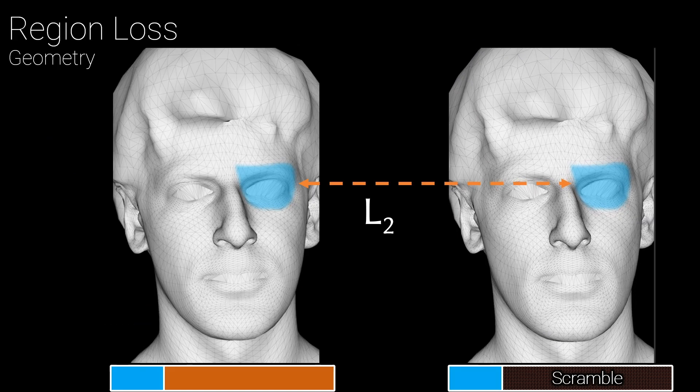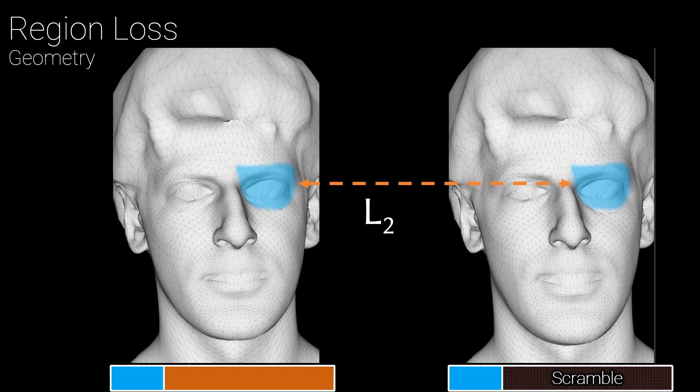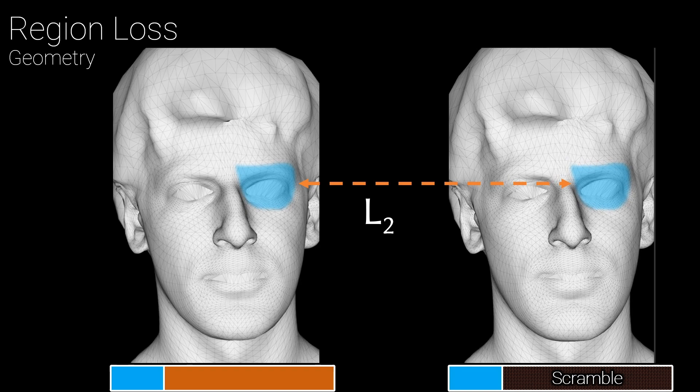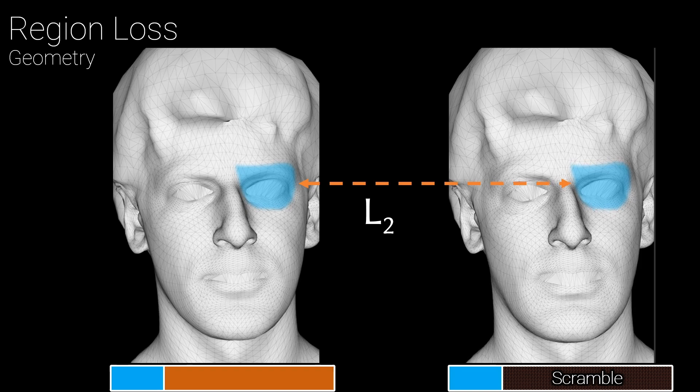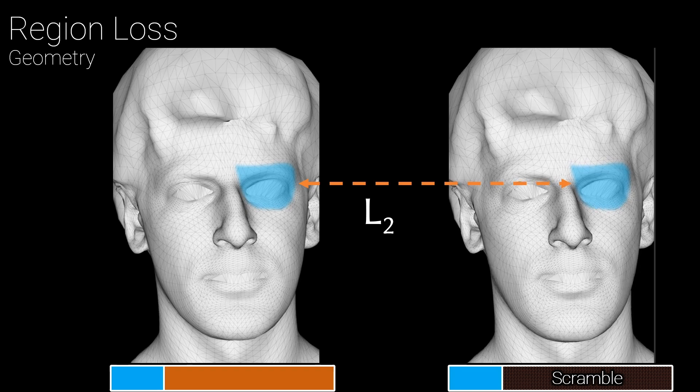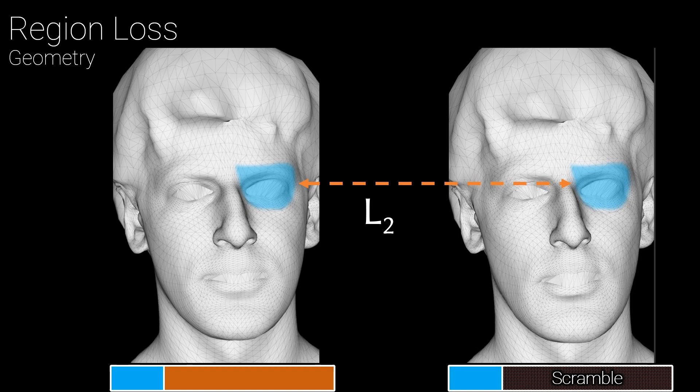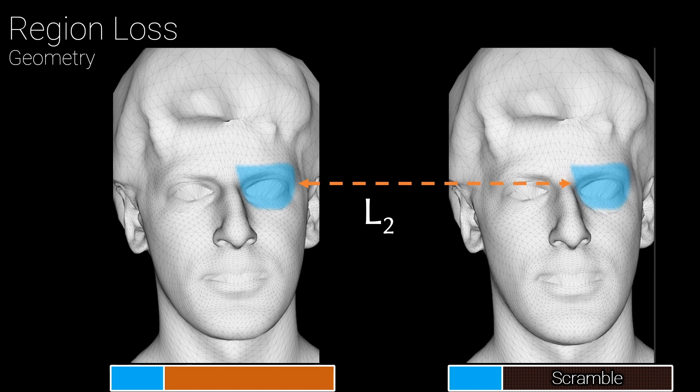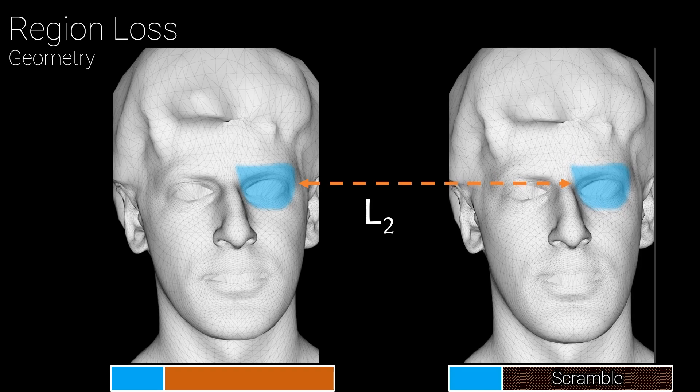To encourage our model to control the left and right eyes independently, we break up the code that controls its face into regions for the left and right eyes and add a loss during training that penalizes changes in the parts of the face not related to each region. For a given region, like the left eye for example, we take the other portions of the code, scramble their contents, and penalize the difference in the decoded output within the left eye region. This effectively says that when you change parts of the code that aren't related to the left eye, the left eye shouldn't move.